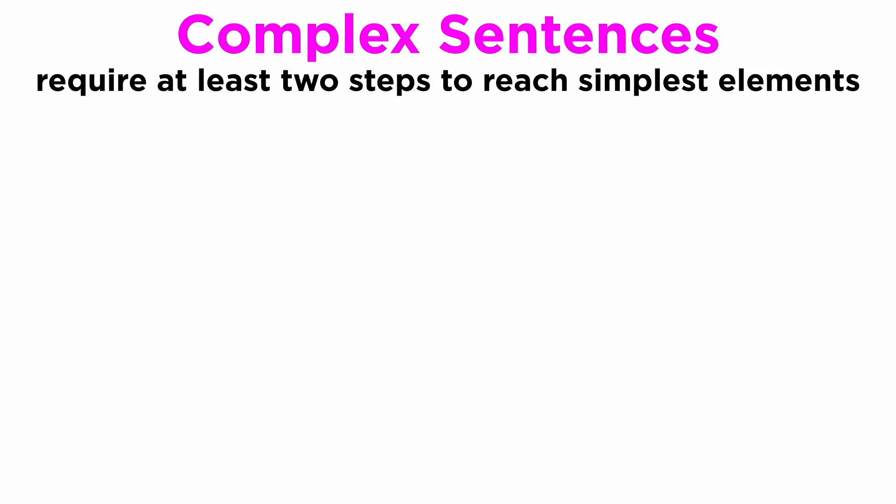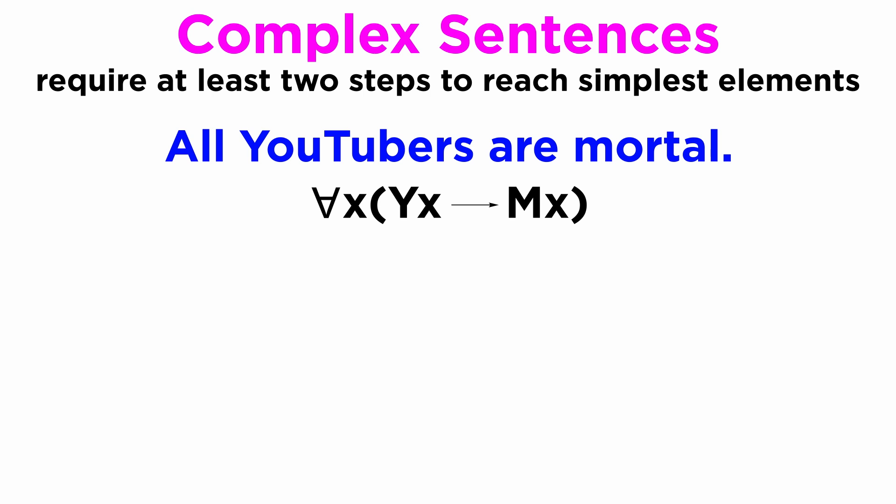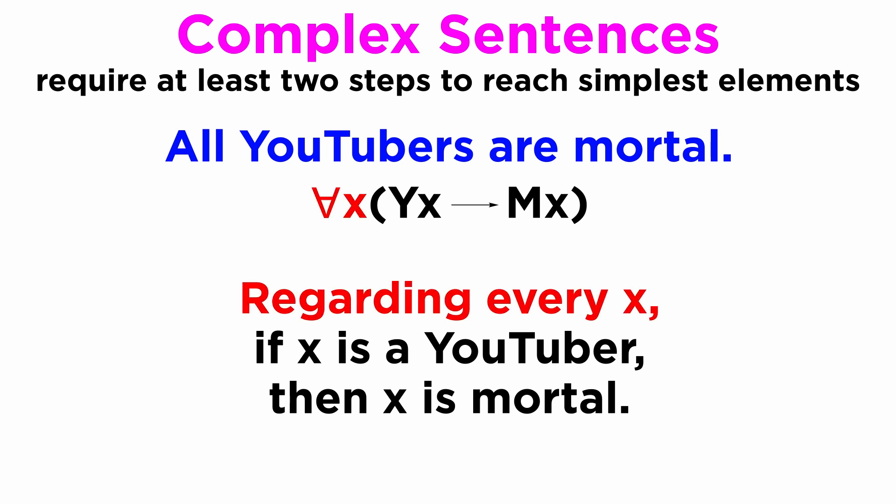Complex sentences, on the other hand, require at least two steps to reach only these simplest elements, with the previous ones revealing other sentences. When we look at the sentence, all YouTubers are mortal, as we've seen previously, it is actually more accurately read as regarding every x, if x is a YouTuber, then x is mortal, akin to a mathematical formula.